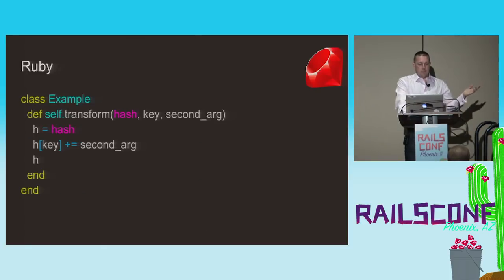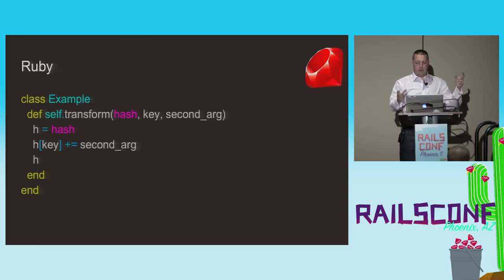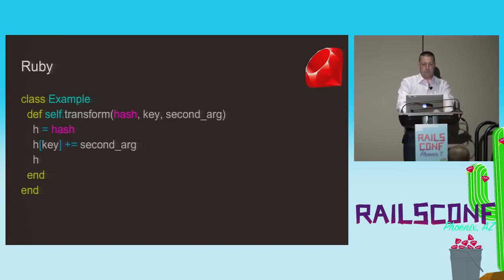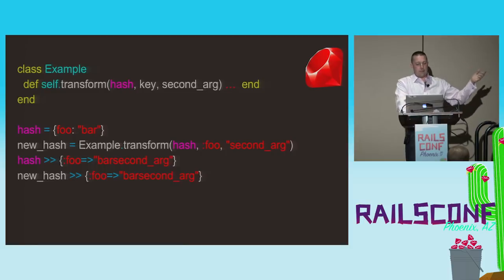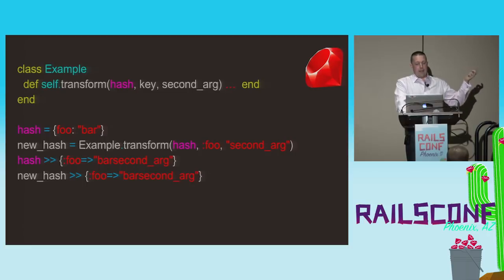Here we have a Ruby example. We define a class and a class method to modify a hash at a given key by adding the third argument to the initial value. When we evaluate it, it does pretty much what we expect, except we'll note that our original hash and our new hash both have the same value, and if you looked at the object ID of the two, they'd be the same object ID.